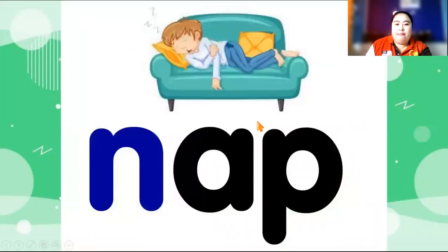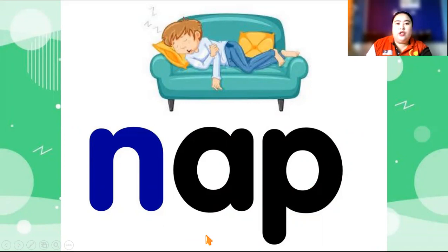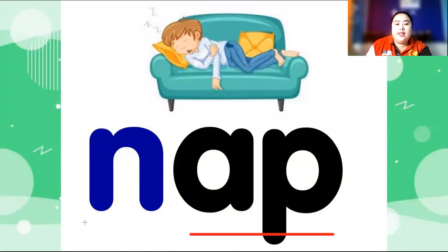Nap. Okay, now we go to EP sound. Okay, EP sound — EP. Okay children, follow me: EP. A and P makes the sound of EP. So what is the sound of N? Nuh. Nuh, EP — nap. Nuh, EP is nap.